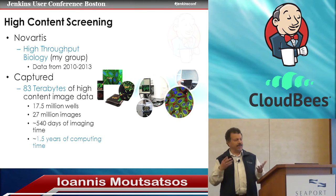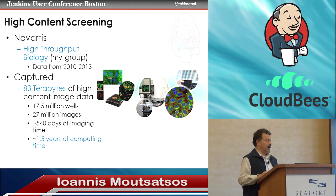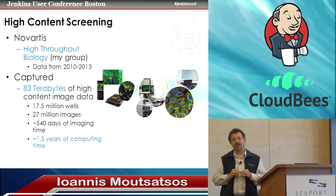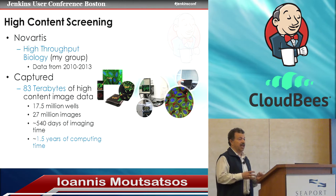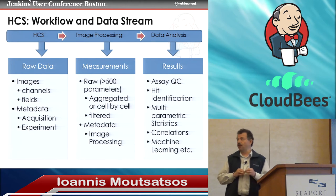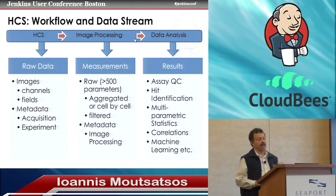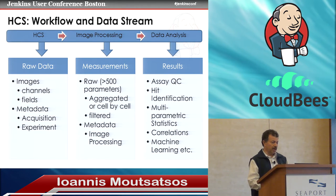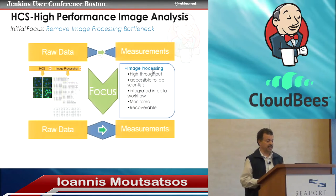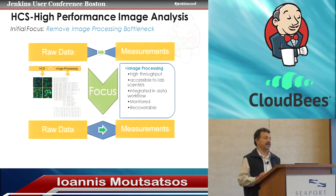In the last three years, my group alone has generated 83 terabytes of high-content images. Importantly, it took over one and a half years of actual computational time to process those images in order to get to numerical data that can be analyzed downstream. Looking at the overall workflow process: the high-content screen generates raw data — the images — image processing generates actual measurements of the cells, which then need to be analyzed to provide results. The bottleneck is actually going from raw data to measurements, and that was the focus of the work I took on a couple of years ago.